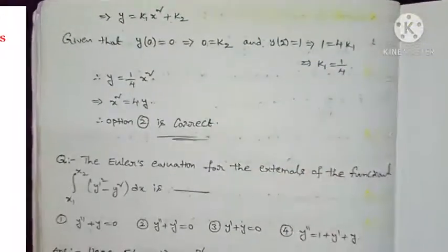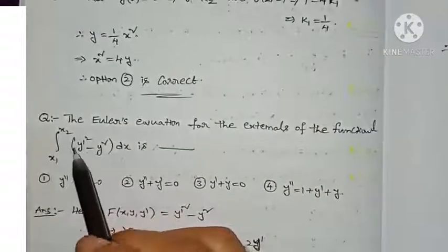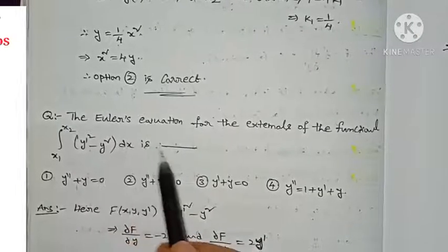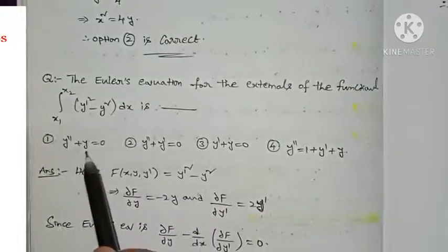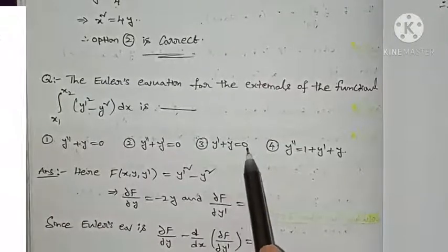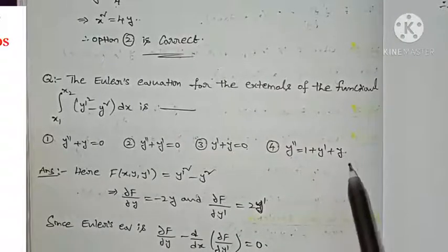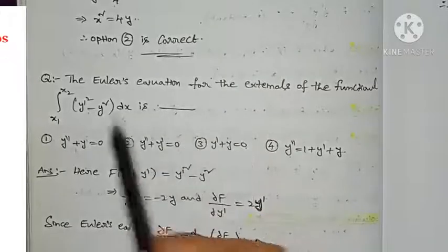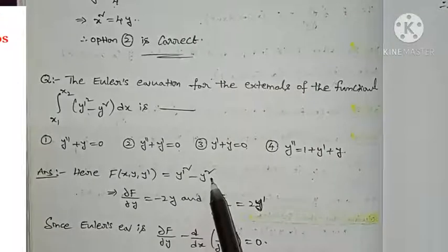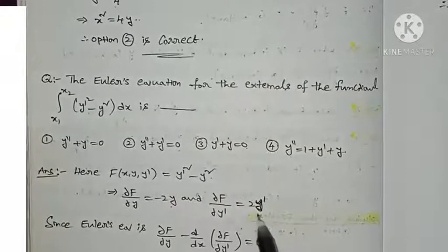Now we discuss question number 54. The question is: find the Euler's equation for the extremal of the functional ∫ from x₁ to x₂ of (y-dash² − y²) dx. The four options are: (1) y-double-dash + y = 0, (2) y-double-dash + y-dash = 0, (3) y-dash + y = 0, (4) y-double-dash = 1 + y-dash + y. Here F(x, y, y-dash) = y-dash² − y², so ∂F/∂y = −2y and ∂F/∂y-dash = 2y-dash.